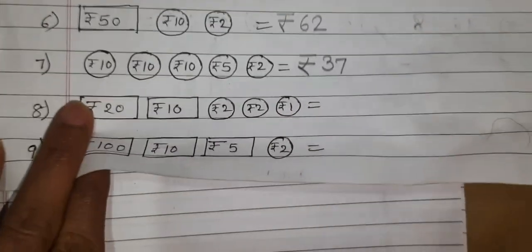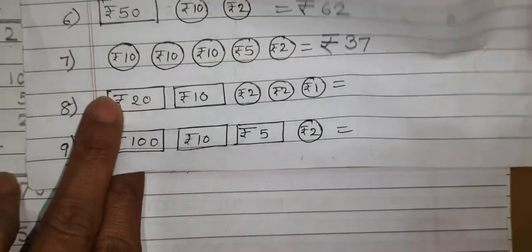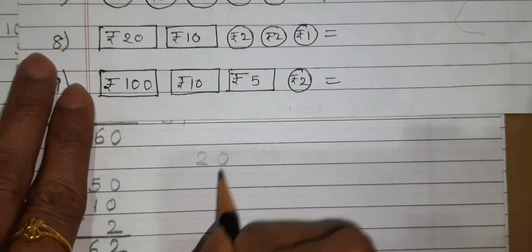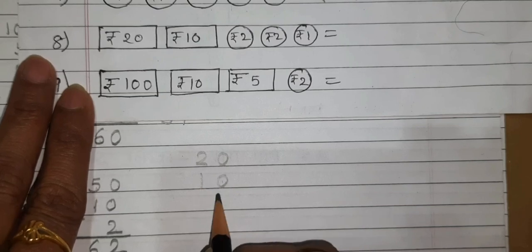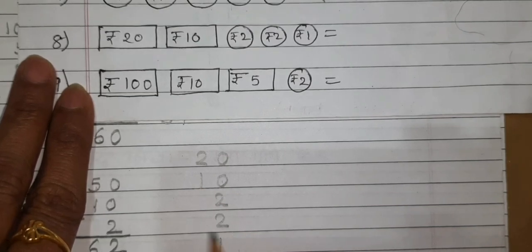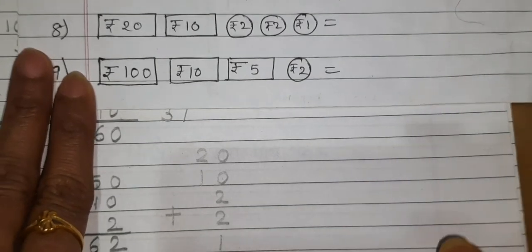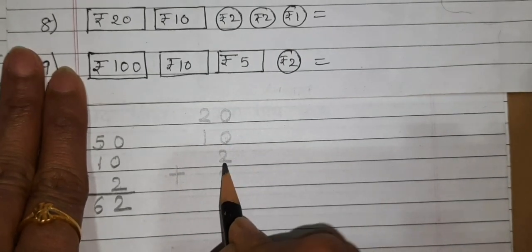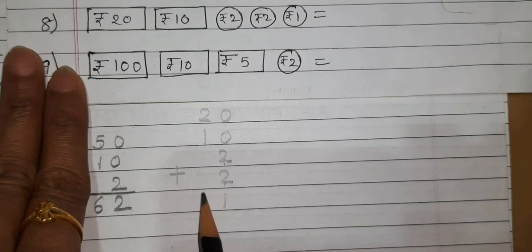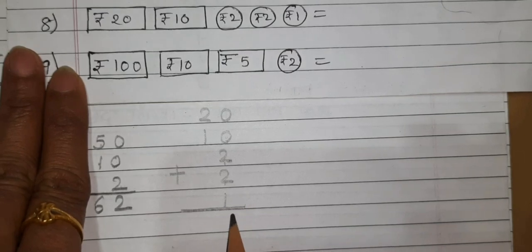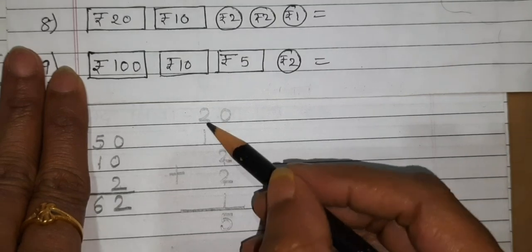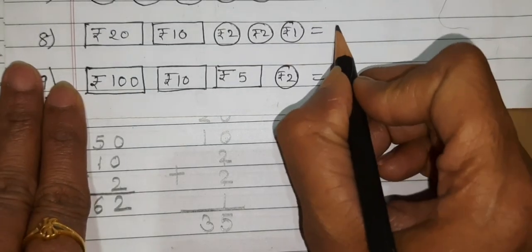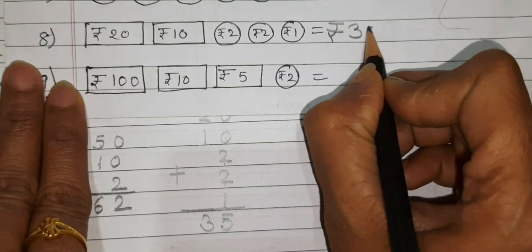Next one: Rupees 20, Rupees 20, Rupees 10, Rupees 2, Rupees 2 and Rupee 1. Add them: ones column 0 plus 0 plus 2 plus 2 plus 1 is 5. Tens column: 2 plus 2 plus 1 is 3. So our answer is Rupees 35.